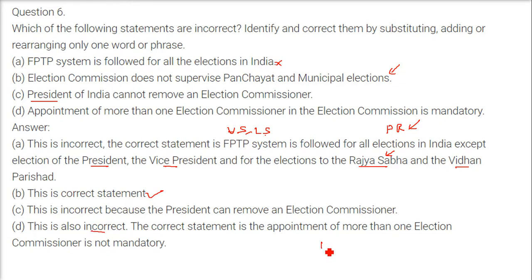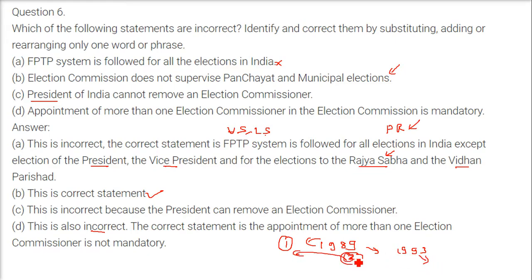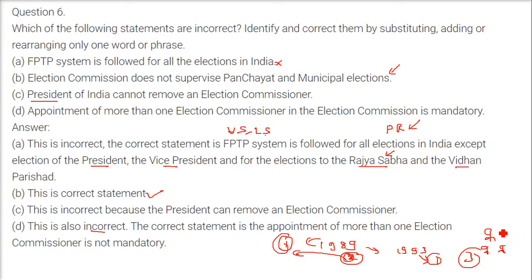Fourth: Appointment of more than one election commissioner is mandatory — this is incorrect. Before 1989, there was only one election commissioner. Just before the 1993 election, two more were added, then removed again after that election, and since then there are three — one Chief Election Commissioner and two Election Commissioners. But it is not mandatory, as the government or the constitution can be amended to change the number.